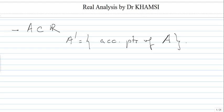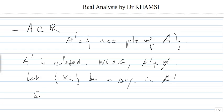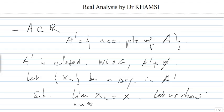First of all, we want to show that A' is closed. We assume, without loss of generality, that A' is not empty, because the empty set is closed anyway. So let x_n be a sequence in A' such that the limit of x_n is equal to x. We want to show that x belongs to A'.